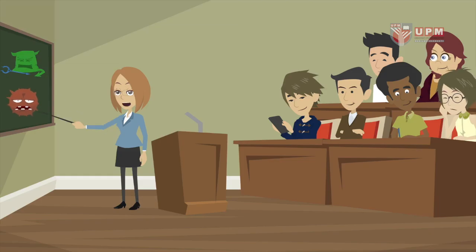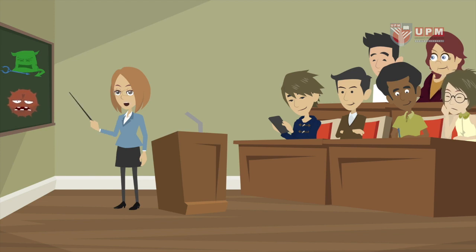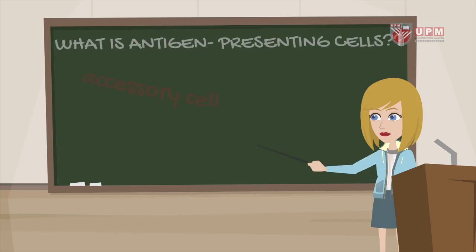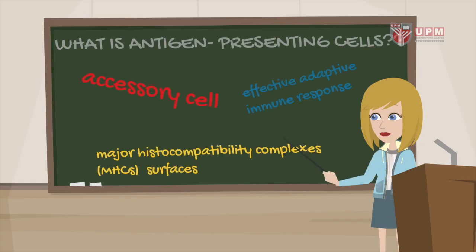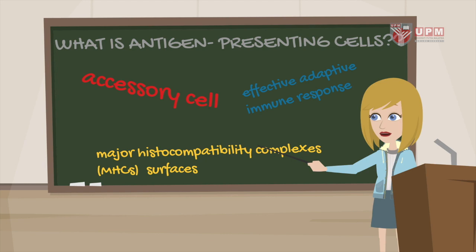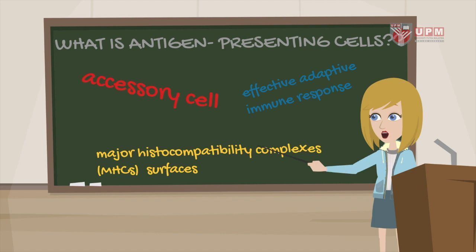Today, we are going to talk about antigen-presenting cells, or simply known as APC. An antigen-presenting cell, or accessory cell, is a cell that displays antigen complex with major histocompatibility complexes, MHCs, on their surfaces. Antigen-presenting cells are vital for effective adaptive immune response.